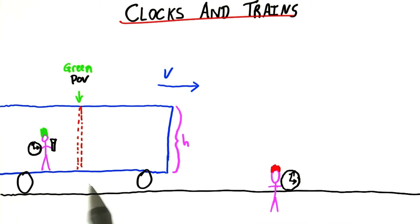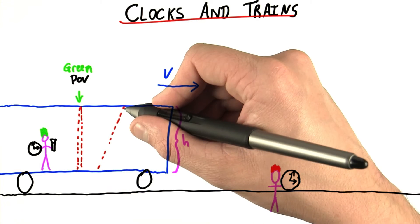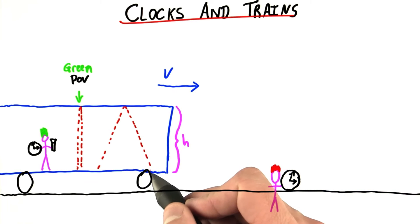From the red point of view, as the train speeds by, it's not going to look like the beam of light goes straight upwards. It's going to go over at some angle, then bounce back down, and be collected and observed.